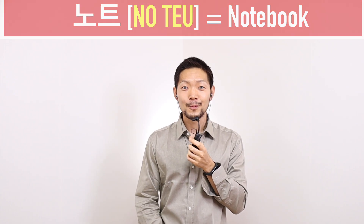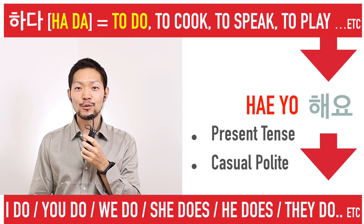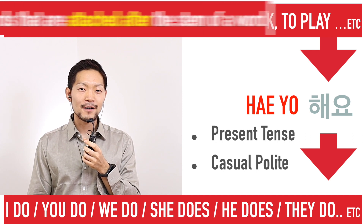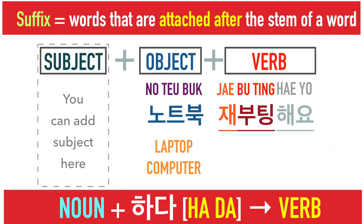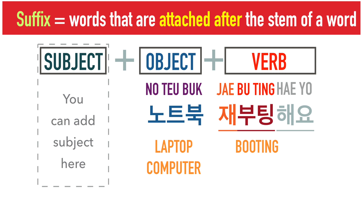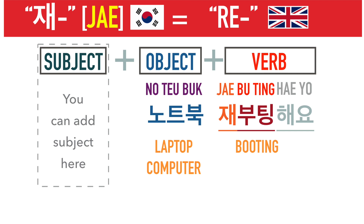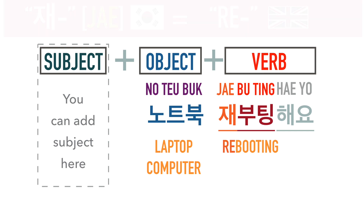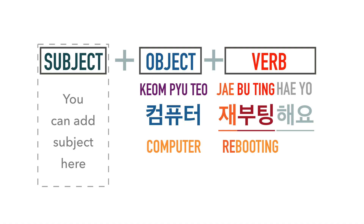해요 is the present tense conjugated form of the verb 하다, which means to do in general. But in this case, it's rather used as a suffix to enable the noun 재부팅 to be used as a verb. 부팅 means the same thing as in English — to start a computer so it's ready to operate. And the first part, 재, is a prefix which means twice or again, just like the prefix re- in English. So this means to reboot — to shut down and restart a computer or a program. A typical example of an English word used in Korean where we keep the -ing. And of course, if you don't use a laptop computer, you can change it to 컴퓨터 재부팅해요.